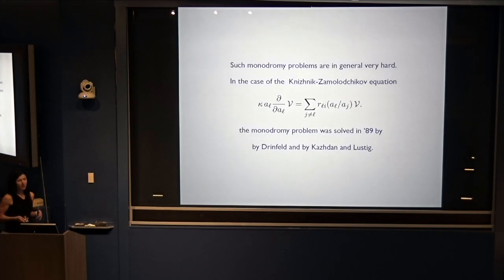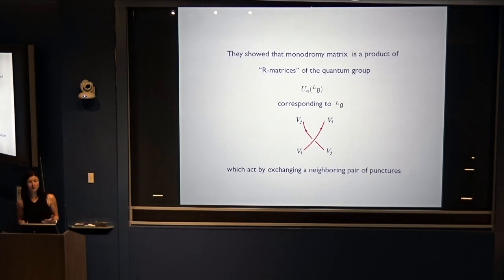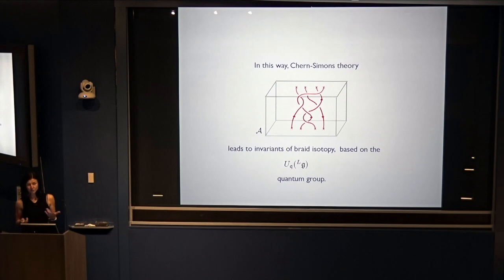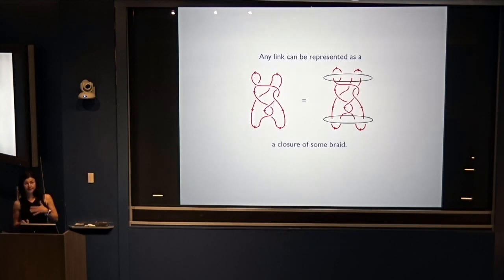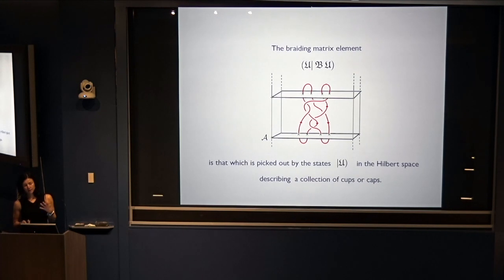In general, such monodromy problems are very hard. For the KZ equation, the monodromy problem was famously solved in 1989 by Drinfeld and by Kazhdan and Lusztig, following works by physicists. They showed that the monodromy matrix is a product of R-matrices of the U_q quantum group corresponding to G, where each R-matrix acts by exchanging a neighboring pair of punctures. In this way, Chern-Simons theory leads to invariants of braid isotopy based on the quantum group. You can represent any link as a closure of some braid, and the path integral of Chern-Simons theory together with a link computes a very specific braiding matrix element.